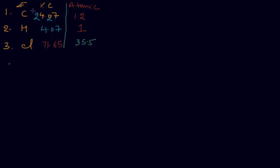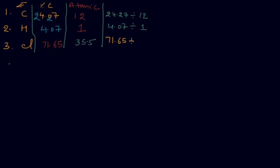In the next step, we divide each percentage composition by its atomic mass to get the simplest mole ratio: 4.07 ÷ 12, 24.27 ÷ 1, and 71.65 ÷ 35.5. After calculation, we get 2 for carbon, 4 for hydrogen, and 2 for chlorine. Now we simplify these.